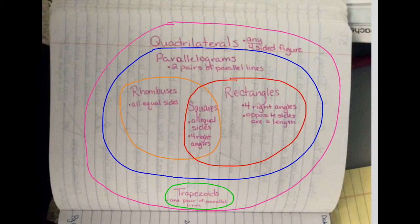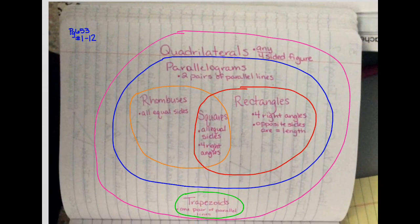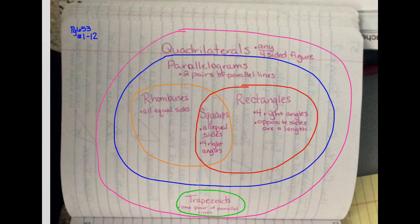You're going to use this graphic organizer and complete page 653, numbers 1 through 12. Be sure you get this recorded in your notebook. If you want to use colored crayons or map colors, be careful with markers because they can bleed through. Make sure you get all this information down into your math notebook and I will see you tomorrow.